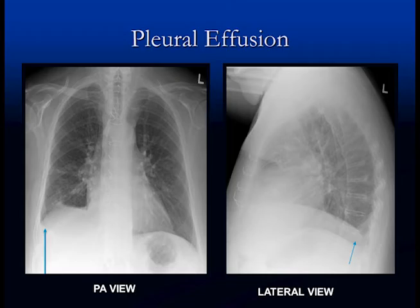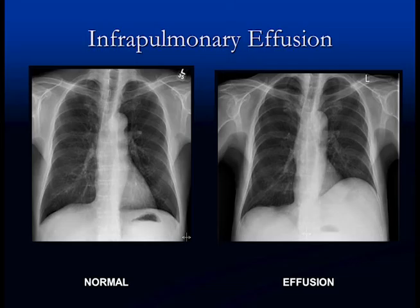Pleural effusions are usually not too difficult to understand. We usually get a little meniscus sign in the corners. The lateral view has the most dependent portion of the chest, so if you're looking for a pleural effusion, you're going to look posteriorly first — specifically on the lateral view in the posterior costovertebral angle. There'll be a little meniscus sign, including a tiny one on the lateral film.